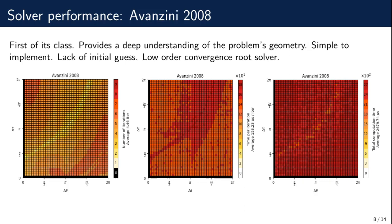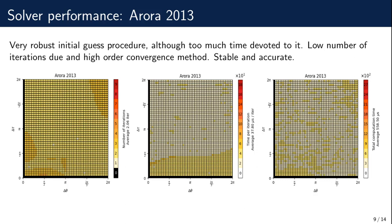The routine devised by Arora only requires a maximum of two iterations, showing high time per iteration only for values of tau below pi halves. One of the main features introduced by Arora is a robust initial guess procedure. Although different regions were introduced using an arbitrary criterion, they result in lower computation time. In fact, Arora's solver is faster than Gooding's and Avanzini's. However, this robust initial guess computation has a cost — most of the time is devoted to the initial guess computation.